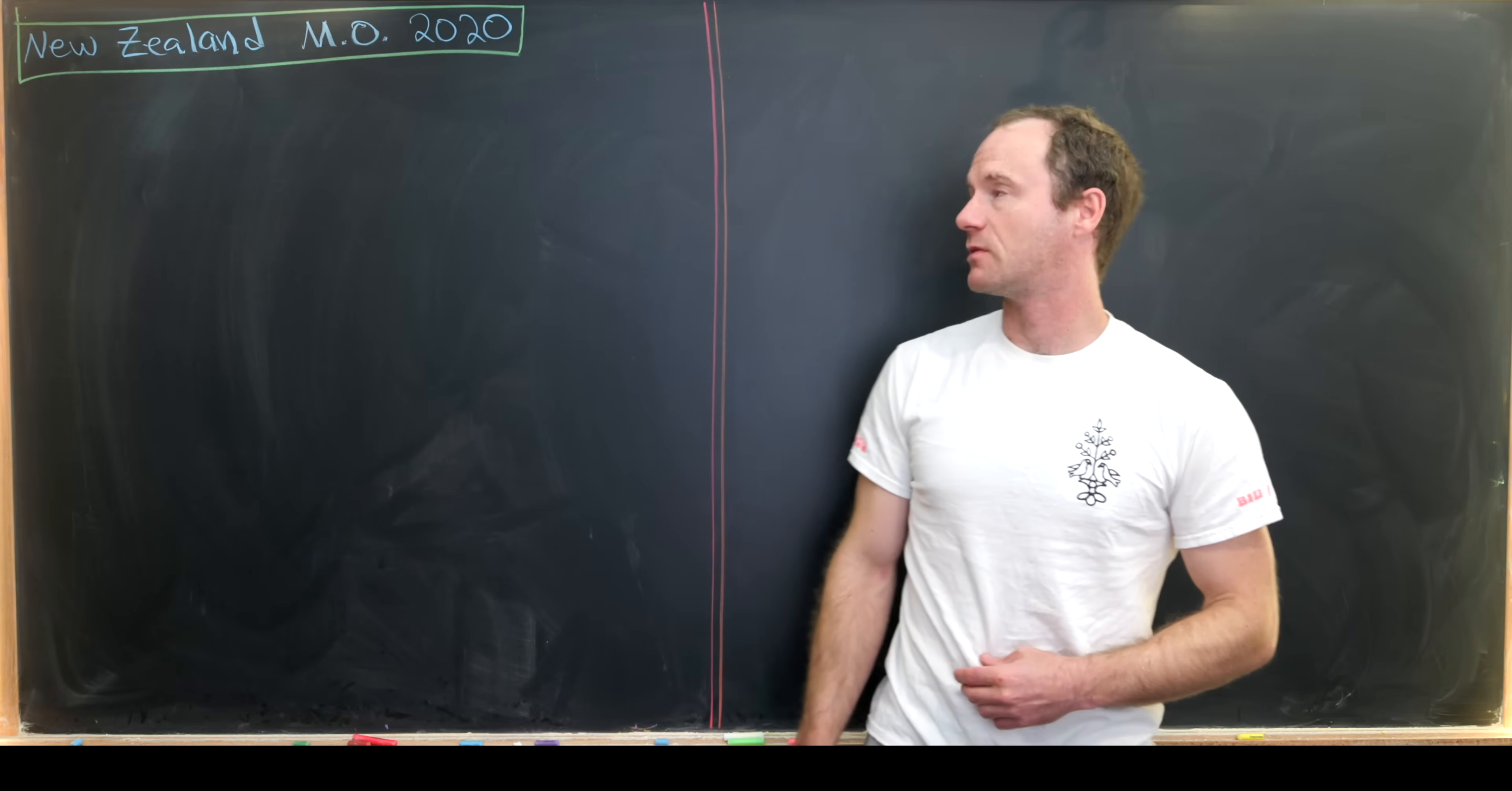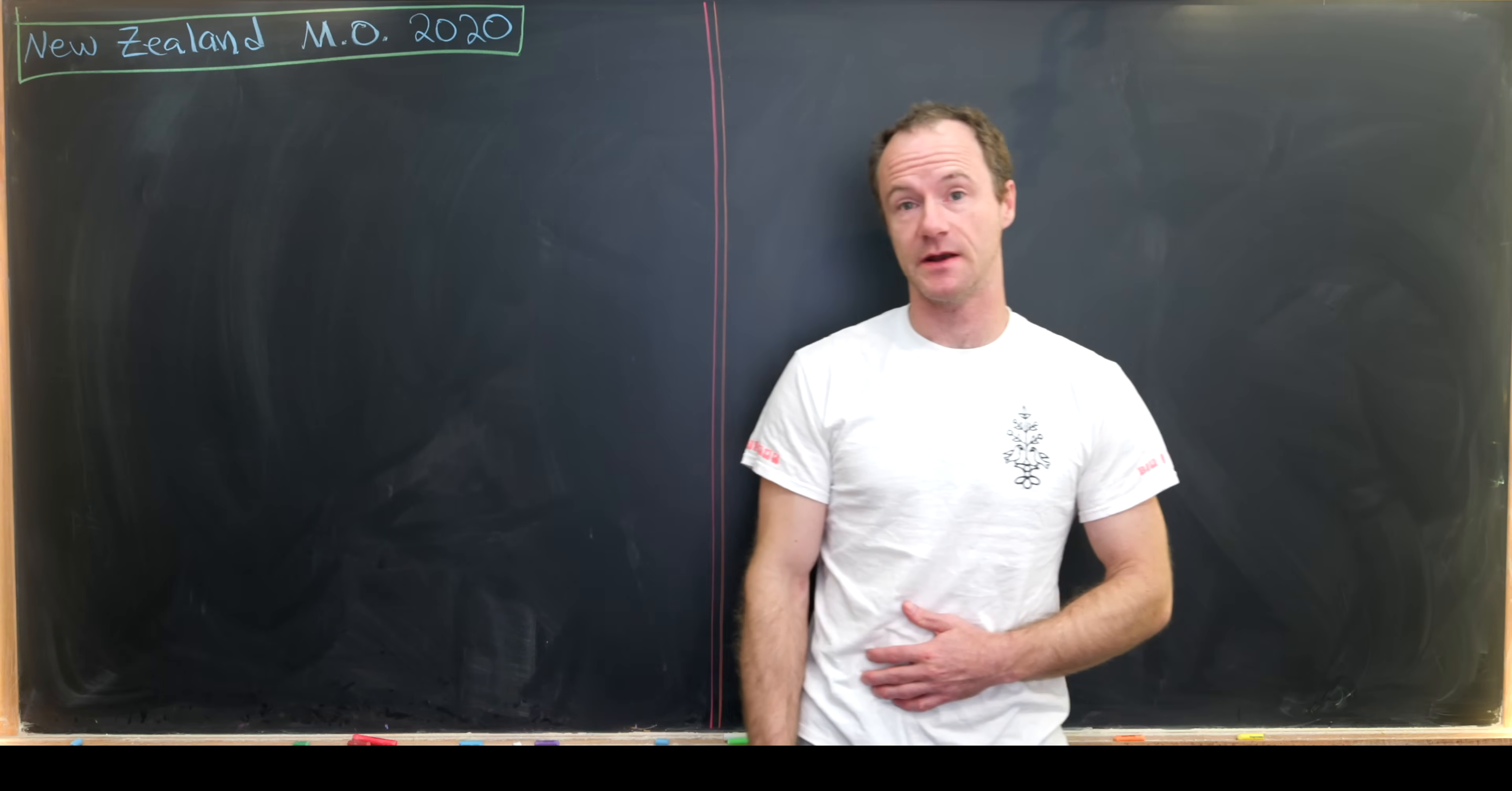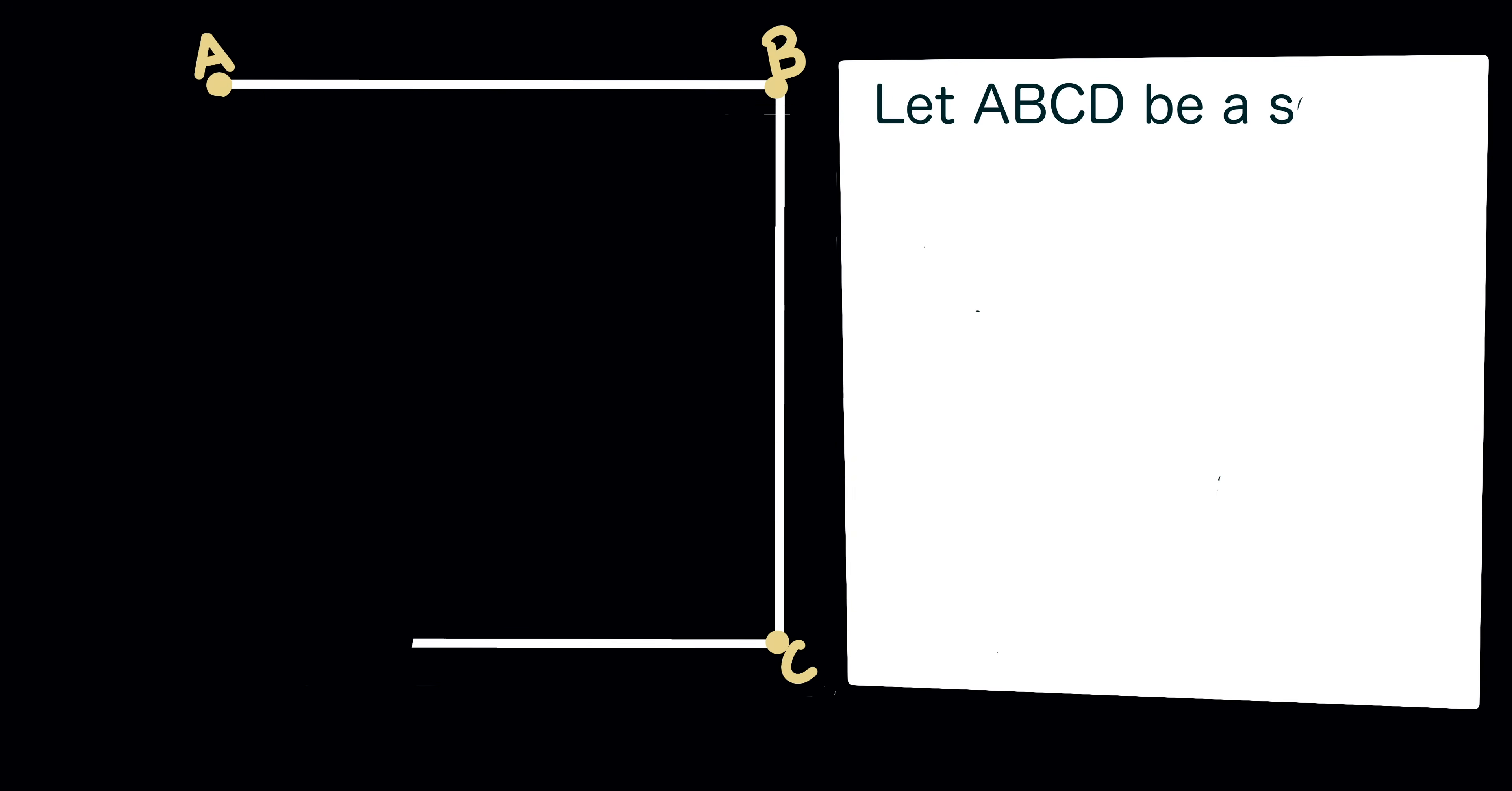Today we've got a nice geometry problem from the 2020 New Zealand Math Olympiad. So let's see what we've got here. We want to let ABCD be a square, and X is a point on line segment BC between B and C.